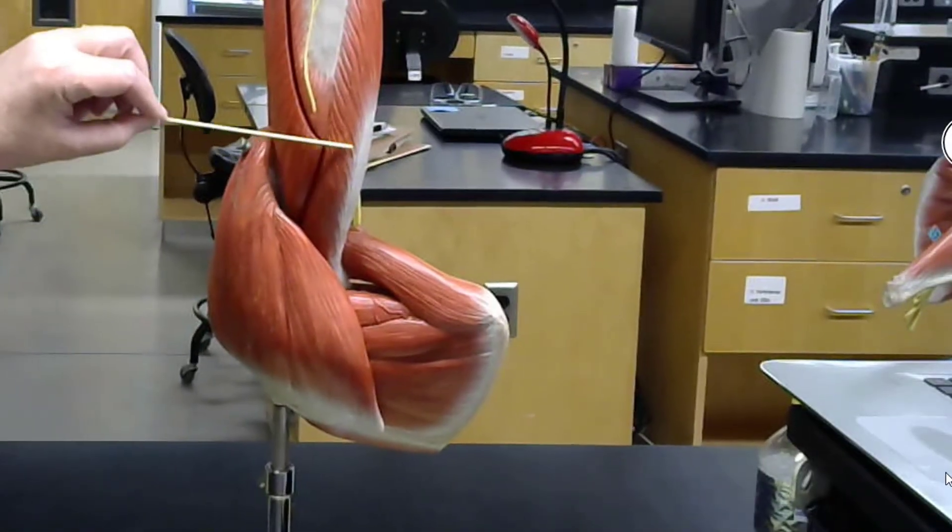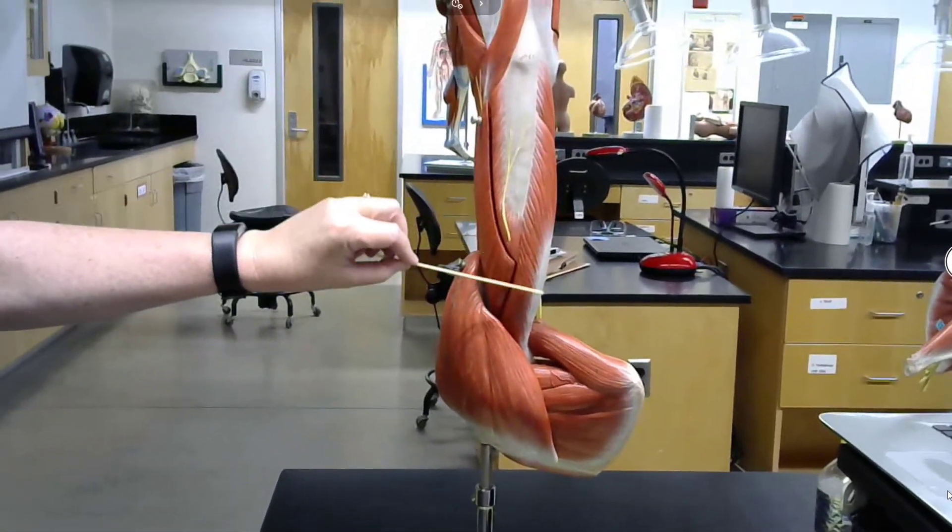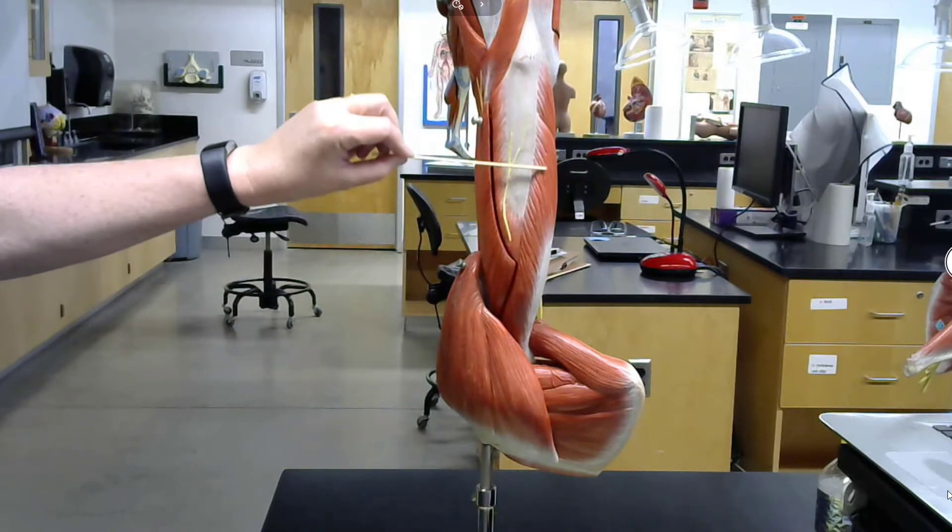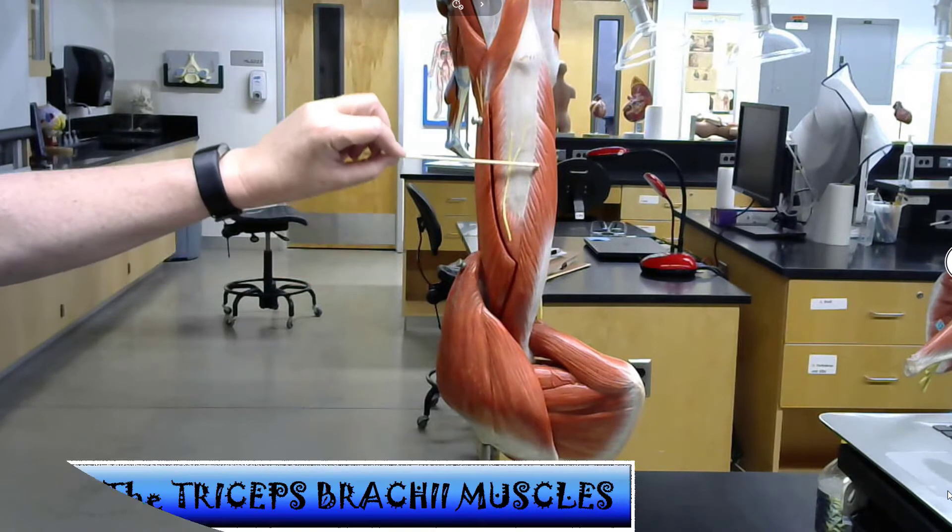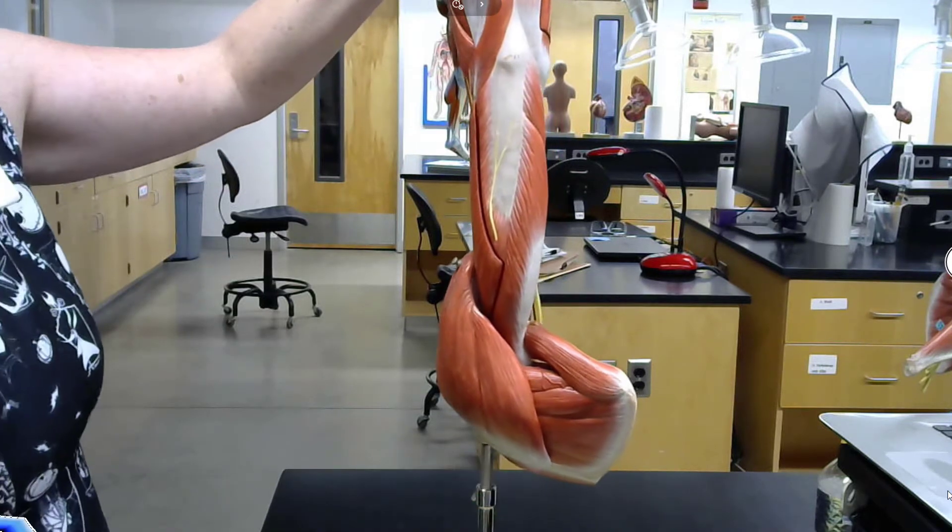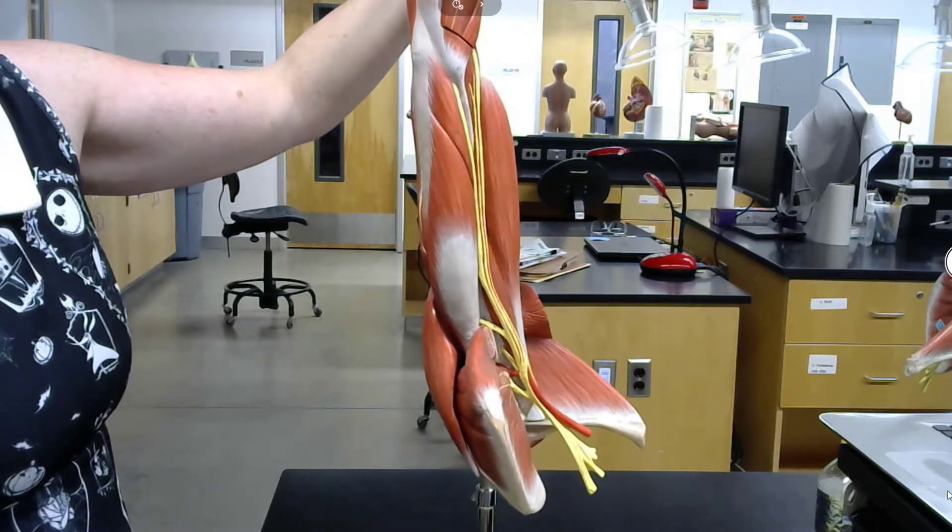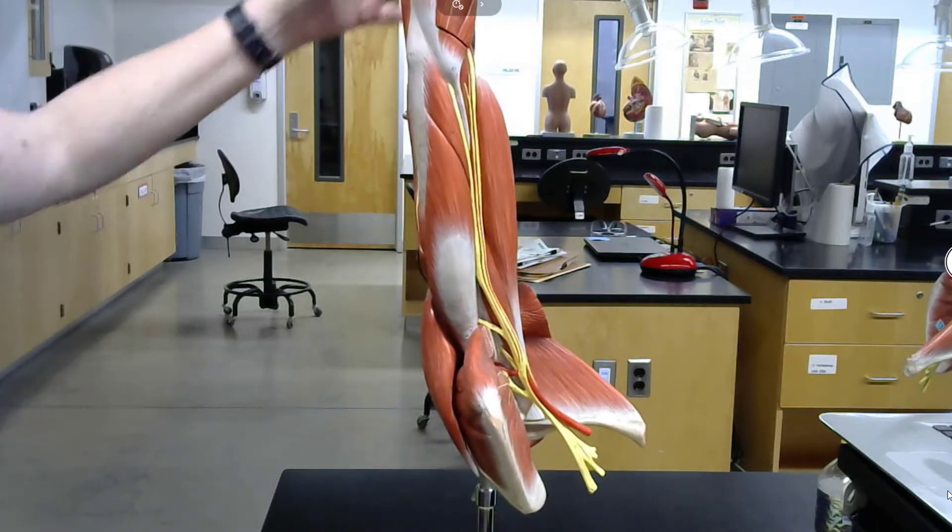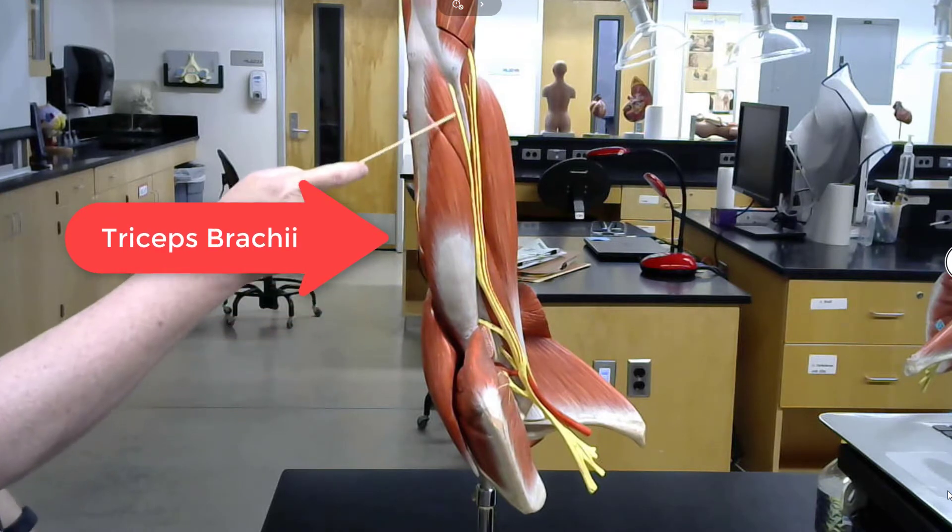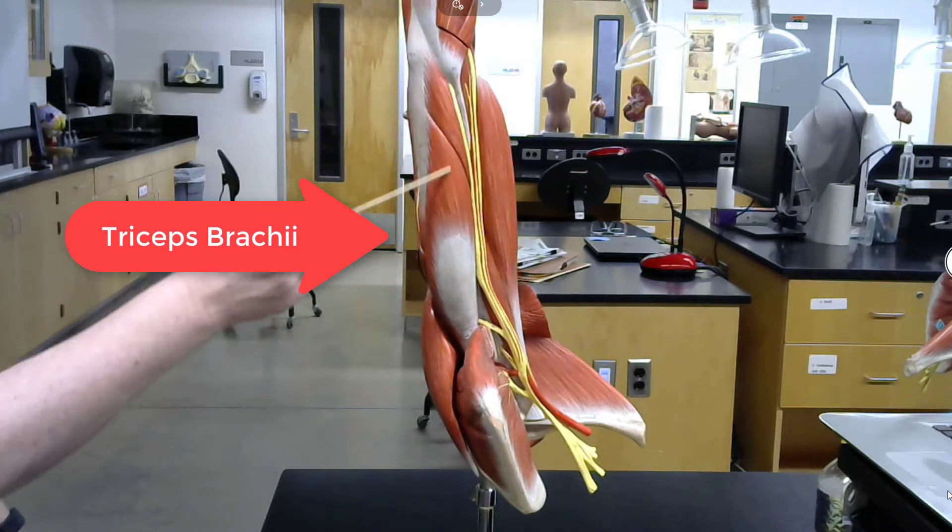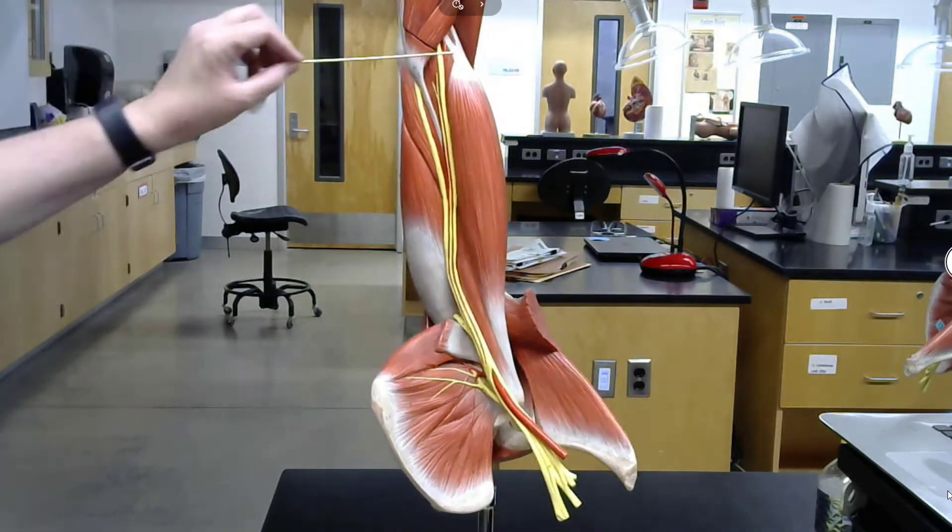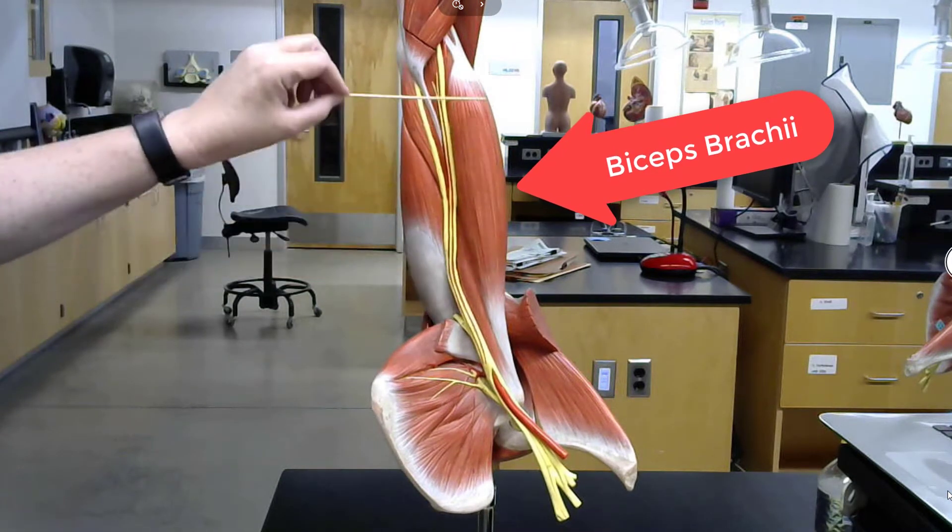This is the back of the arm. So, this is going to be the triceps brachii, the triceps brachii.